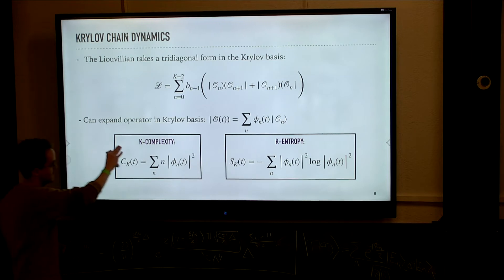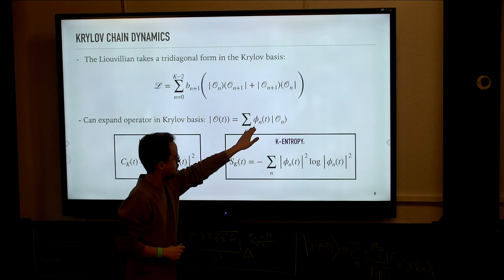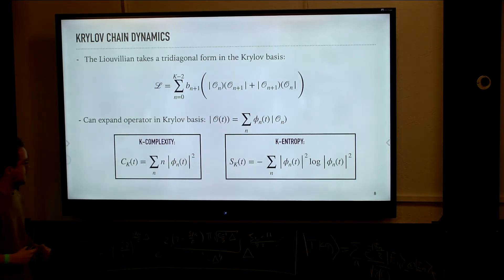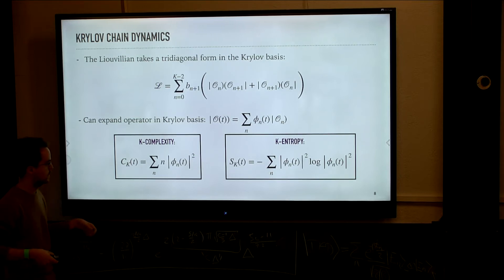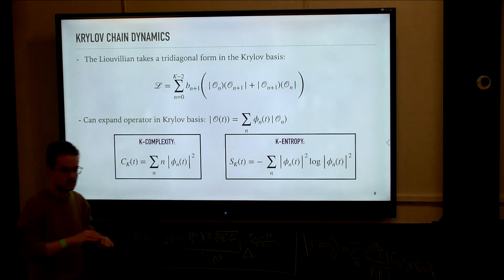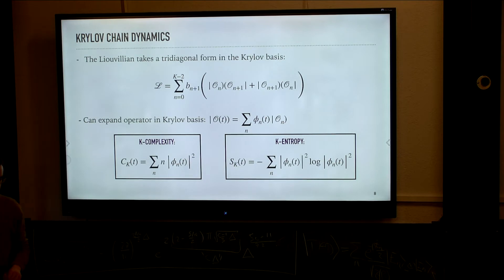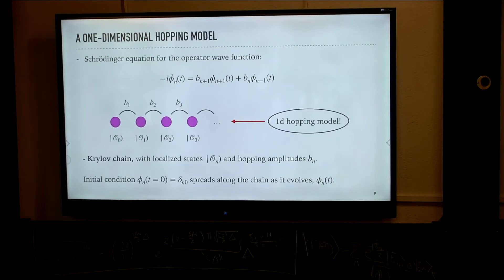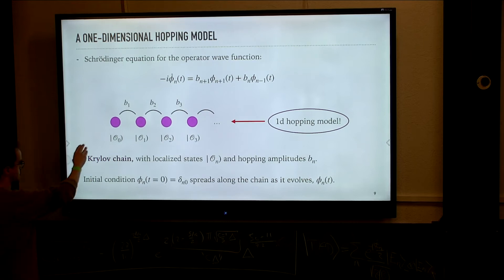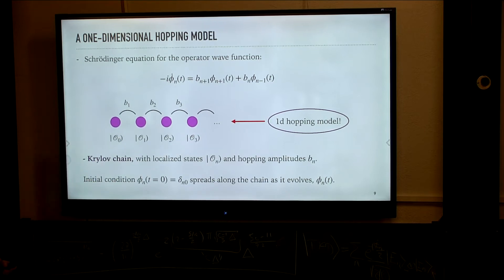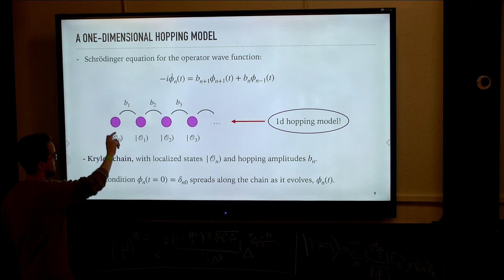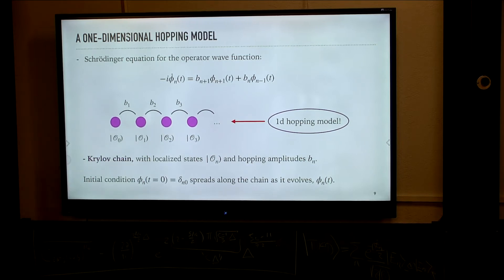The idea now is to expand the operator in terms of the Krylov basis — just a linear combination with some coordinates that we will call the operator wave function. Here is where we define Krylov complexity: it is just the expectation value of position with respect to this basis that we've built. Likewise, we can construct Krylov entropy, which is the Shannon entropy of this operator wave packet. We have a chain — the Krylov chain — where localized states are the Krylov elements. Because of the tridiagonal form of the Liouvillian, the hopping amplitudes are given by the Lanczos coefficients.